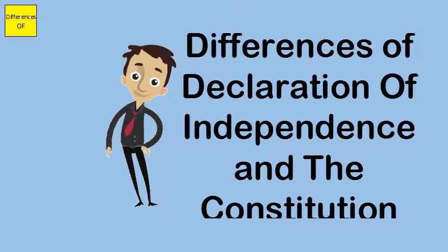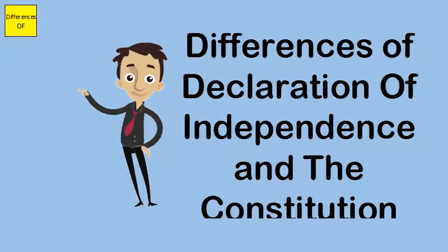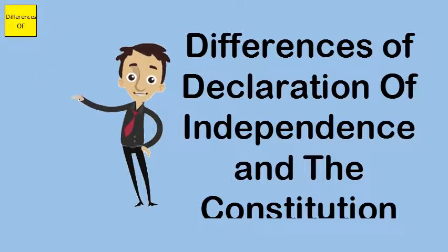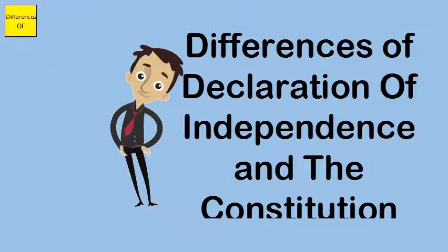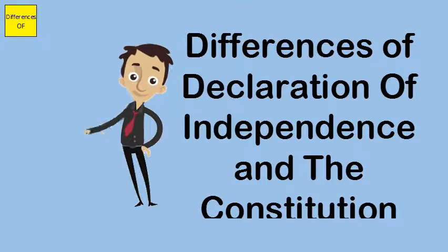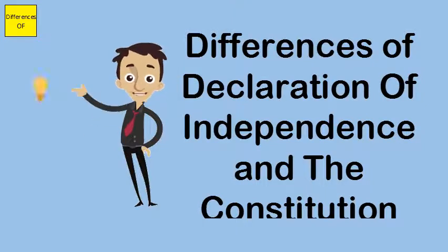The Constitution was written in 1787 by a convention of all the states, which was called for the purpose of recommending changes in the old government.